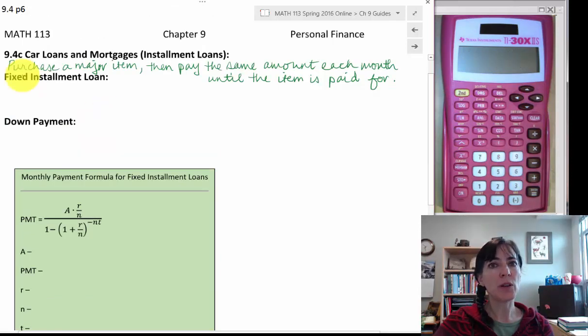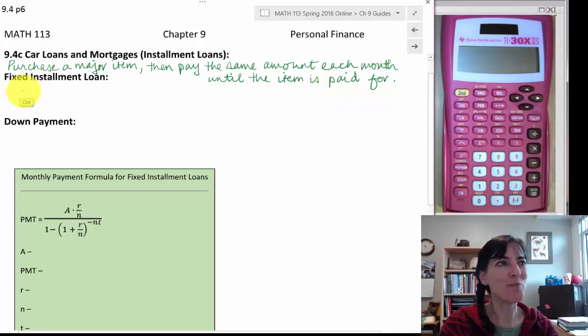So with the car loans and mortgages, then we're talking about purchasing a major item like a car or a mortgage or something else that you could make regular monthly payments on, and then you pay the same amount each month until the item is paid for. So you get the use of the item up front, but you have to make payments on it all the time.